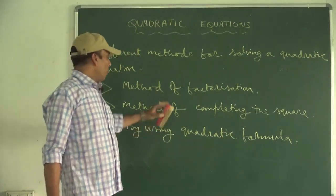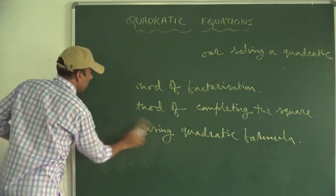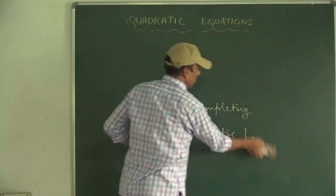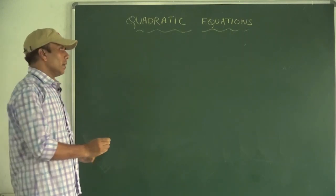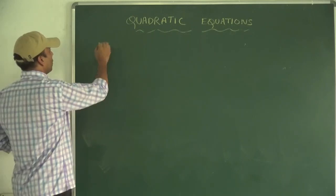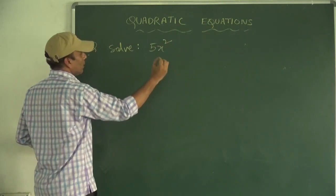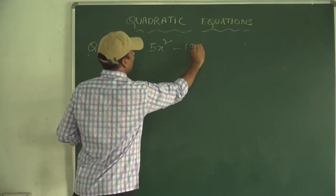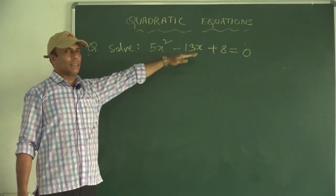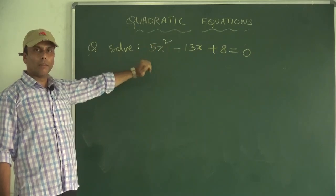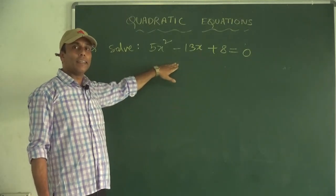One by one, each method will be applied for solving a quadratic equation. Let us take one example: 5x² - 13x + 8 = 0. By different methods we will try to solve that equation. Before that, let us check what will be the nature of the roots by finding the discriminant.